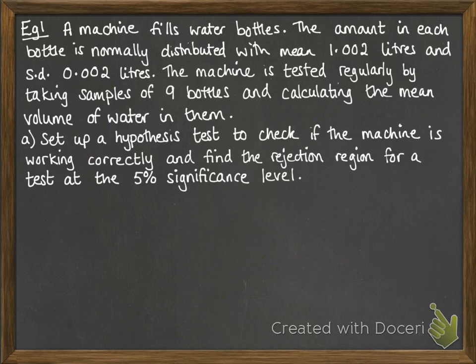So let's show you how to do this. We've got a machine that's filling up water bottles. The amount put into each bottle is normally distributed with mean 1.002 liters and a standard deviation of 0.002. The machine's tested regularly by taking samples of 9 bottles and calculating the mean volume. I'm going to set up a hypothesis test to check if the machine is working correctly and find the rejection region for a test at the 5% significance level.